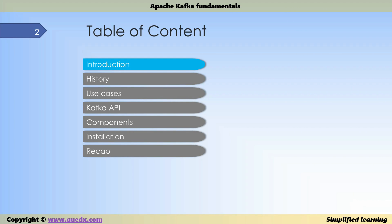We'll start with an introduction to Kafka, followed by a brief history about how it originated and the use cases it was trying to solve. We'll then cover different use cases Kafka can solve, introduce various Kafka APIs such as producer, consumer, and stream processing API, discuss components such as topics, partitions, and brokers, cover installation, and finally do a recap.